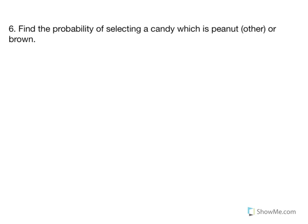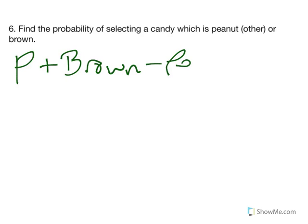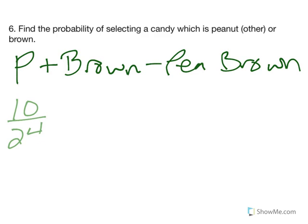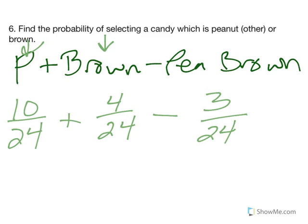Then I look at number six. Find the probability of selecting a candy, which is peanut or brown. Okay, I need a new color for fun here. So let's go peanut plus brown minus peanut brown. The peanut brown ones. Do we have peanuts that are brown? Yes. So since there is an overlap, we're golden. So we say peanut. We have 10 peanuts out of the 24 total. Well, how many total brown candies do we have? And that answer is four. So total peanut here, total brown here, and now I look at the overlap. There are three peanut candies that are brown. So when I put those together, 10 plus 4 is 14. 14 minus 3 is 11. I swear my math is not horrible. And then when I take 11 over 24, I get 0.458.